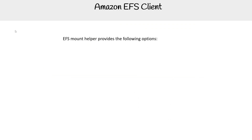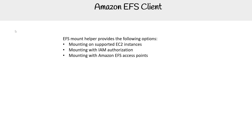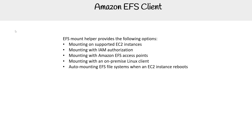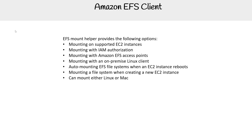EFS mount helper provides the following options: mounting on supported EC2 instances, mounting with IAM authorization, mounting with Amazon EFS access points, mounting with on-premises Linux client, auto-mounting EFS file systems when an EC2 instance reboots, mounting a file system when creating an EC2 instance, and it can mount either Linux or Mac.